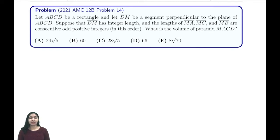Hi everyone, in this video we're going to be looking at 2021 AMC 12B Problem 14. It says let ABCD be a rectangle and let DM be a segment perpendicular to the plane of ABCD. Suppose that DM has integer length and the lengths of MA, MC, and MB are consecutive odd positive integers.